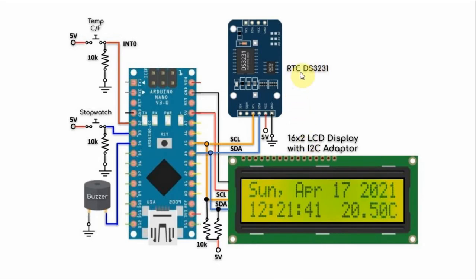We have a real-time clock DS3231 and a 16x2 LCD display, both connected to the I2C bus of the Arduino. We have a push button connected to interrupt pin 0, which is used to toggle the temperature from Celsius to Fahrenheit and vice versa.